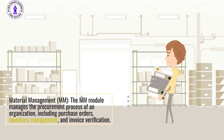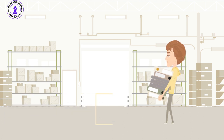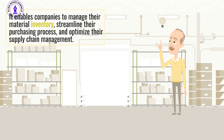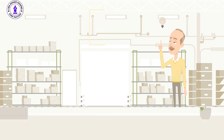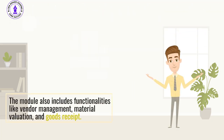Material Management: The MM module manages the procurement process of an organization, including purchase orders, inventory management, and invoice verification. It enables companies to manage their material inventory, streamline their purchasing process, and optimize their supply chain management. The module also includes functionalities like vendor management, material valuation, and goods receipt.